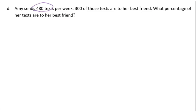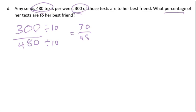Now Amy sends 480 texts per week, and 300 of those are to her best friend. I want to know what percentage of this it is. So 300 out of 480. The first thing we want to do is simplify that fraction. So I'm going to start by saying, let me just divide top and bottom by 10. That will give me 30 over 48. Already that's better to deal with, but I still need to simplify this further. So let's now think 30 and 48, what's the highest common factor? Which is 6. So let's divide top and bottom by 6, and that will give me 5 over 8.